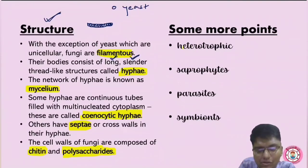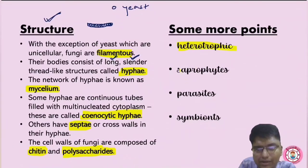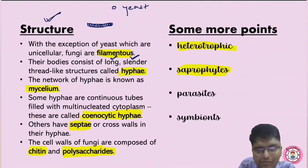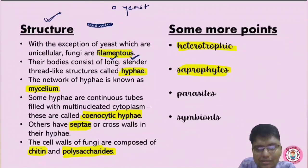Fungi are heterotrophic — dependent on other organisms for food. Saprophytic mode means growing on dead or decayed organic matter. For example, food past its expiry date gets damaged by fungi because the contents are dead — fungus grows on that dead matter. That mode is called saprophytic.